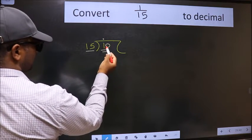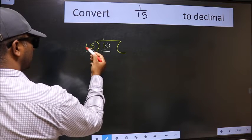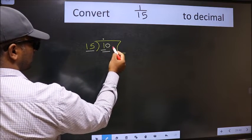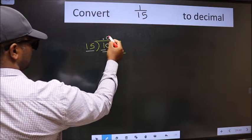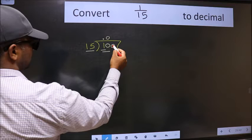Now 10. 10 is still smaller than 15. So we should get one more 0 here. And the rule to get 0 here is, put 0 here, then we can take another 0 here.